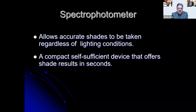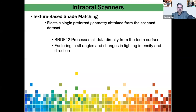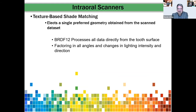Regardless of lighting conditions, the spectrophotometer is a self-sufficient device offering shade results in seconds. It has a display screen and can transfer data to computer software, mapping the tooth with different shades at different sections — making it easier to layer porcelain in the laboratory. Intraoral scanners use a texture-based shade matching system called BRDF — bidirectional reflectance distribution function — processing all data directly from tooth surfaces, factoring in all angles and changes in intensity and direction.